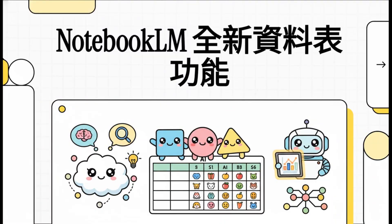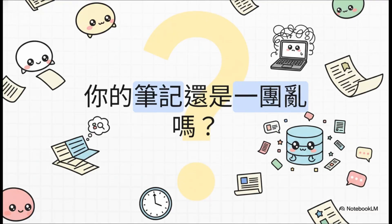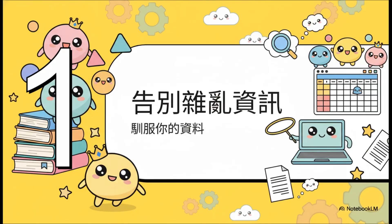大家好，欢迎来到MS AI学习频道。今天我们要聊一个真的是强到有点离谱的更新。如果你也常常被那种四散各处的资料搞得一个头两个大，接下来的内容绝对会让你眼睛一亮，甚至彻底改变你处理资讯的方式。你是不是有过这种经验，就是那些重要的资讯总是东一块西一块，散落各处，可能是会议记录、网路上的文章，或好几份不同的研究报告，要把这些东西手动整理成有用的格式，光用想的就觉得心好累。不过，有好消息，我们现在有更好的工具可以来驯服它。